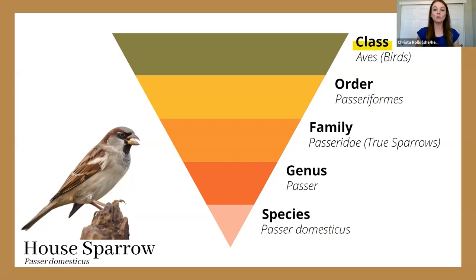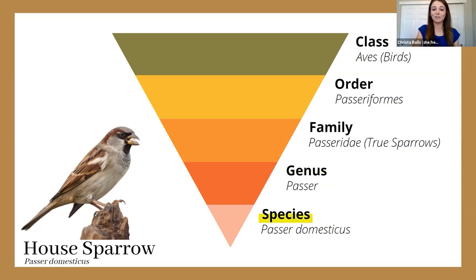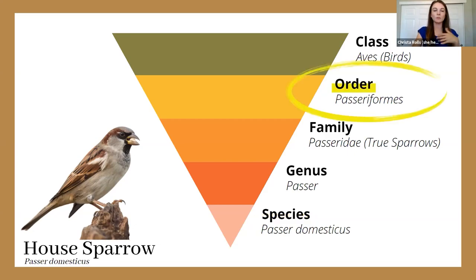The house sparrow is in the order Passeriformes, then the family Passeridae — the true or old world sparrows — then genus, and finally species: Passer domesticus. No other species shares that exact name. We can use this larger group classification to narrow down the kinds of birds we're seeing in the field, even starting at the order level.